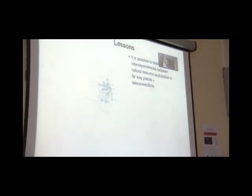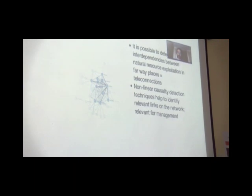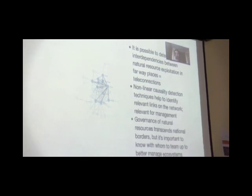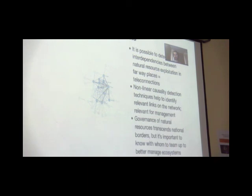So quickly, we can see that it's possible to detect these interdependencies between resource production in faraway places, so we can empirically map these teleconnections and possibly study how regime shifts might be related in distant places. We use, in this case, a nonlinear causality detection technique to identify relevant links, and this is important because governments need to better understand with whom they need to work together in order to take care of their national resources. Not all links matter. It's only a few links that are able to predict causally what is happening with national resources. So in the case of France, for example, we would like to know which countries your consumption patterns are affecting, or the other way around, what countries' consumption patterns are impacting, in a causal way, France's resources.